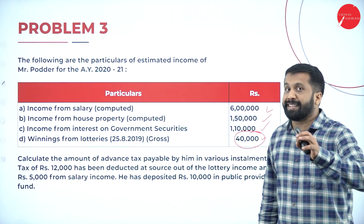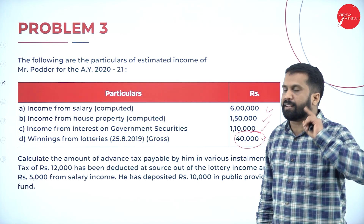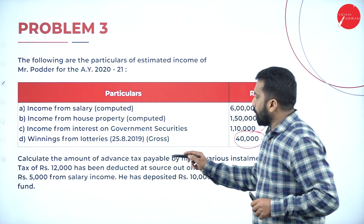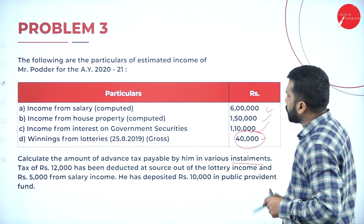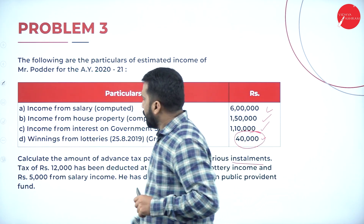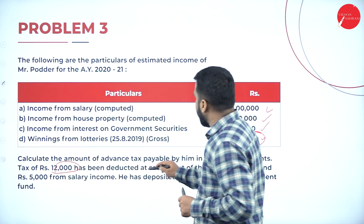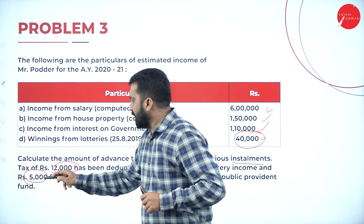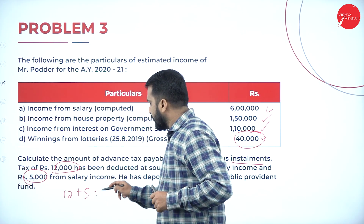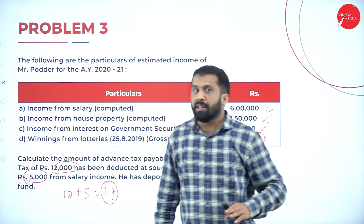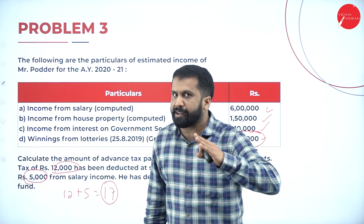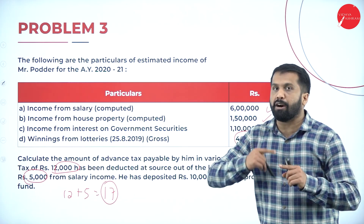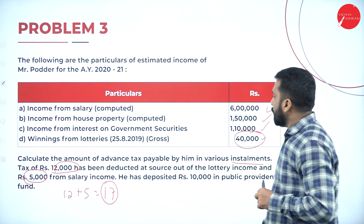For horse race winnings of forty thousand, if the net amount is given, we calculate using hundred by seventy. Calculate the amount of advance tax payable in various installments - there are four installments. Tax of twelve thousand has been deducted at source on lottery income, and five thousand from salary. So seventeen thousand has already been paid in tax, and this will be subtracted from the final tax payable.